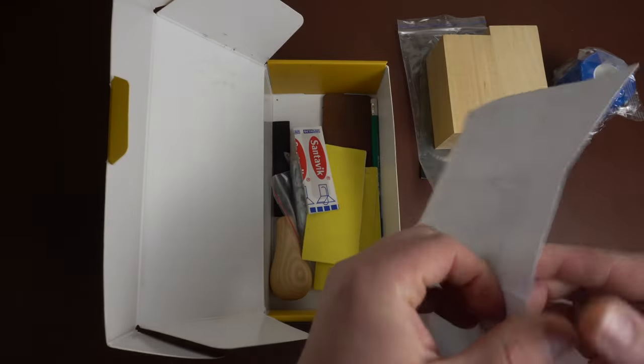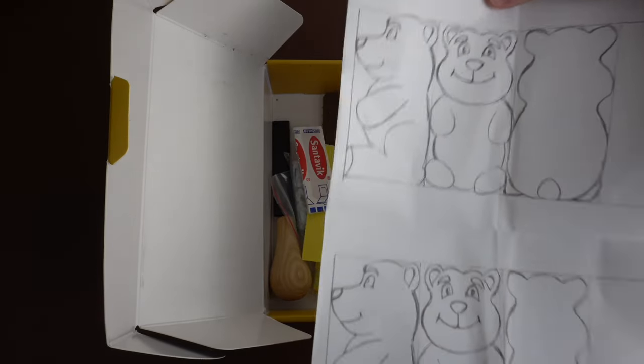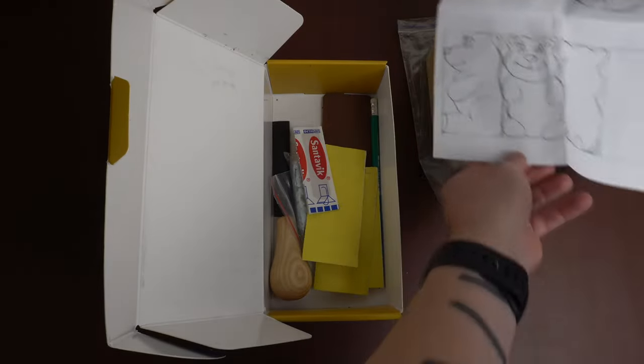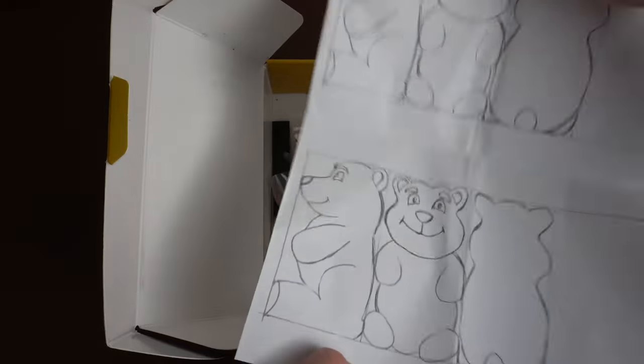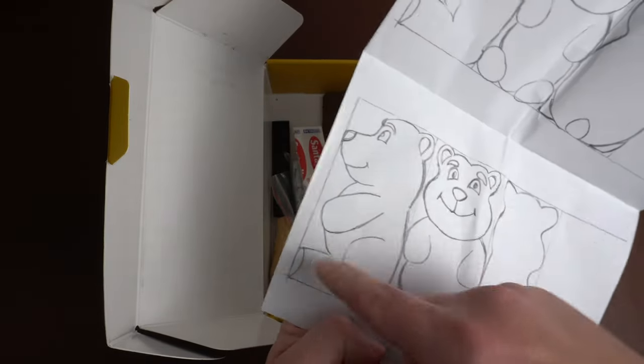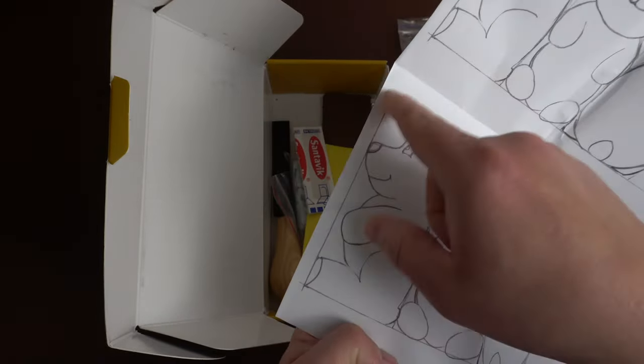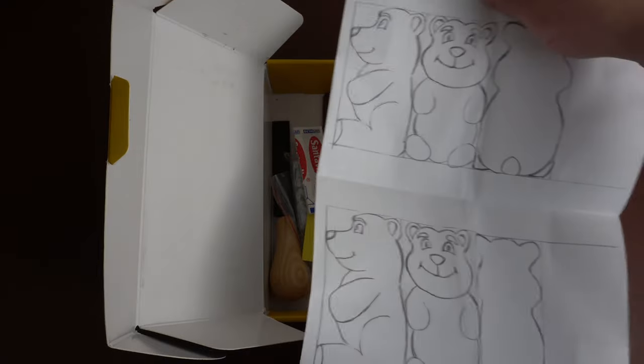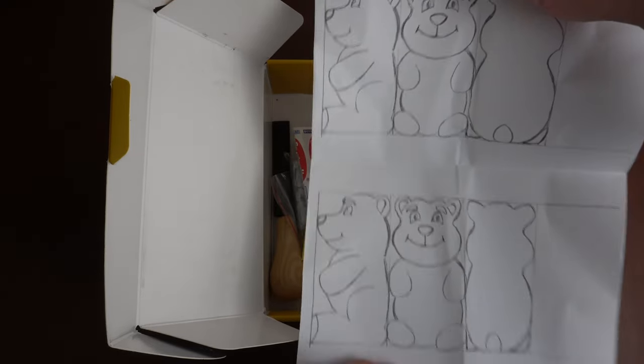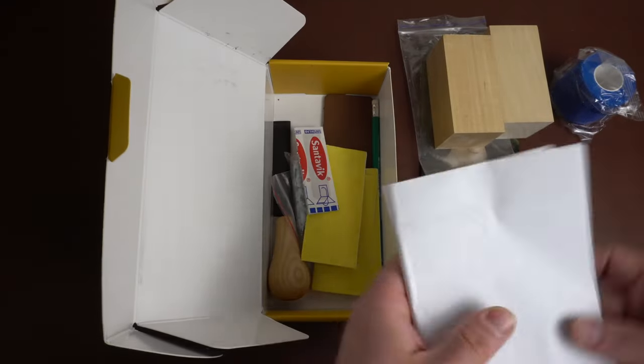It is a bear carving kit so they include this template so you can put that onto the wood. You could glue it on or use a band saw or scroll saw to cut out all this extra stuff, the excess wood. It's nice that they give you a little template.